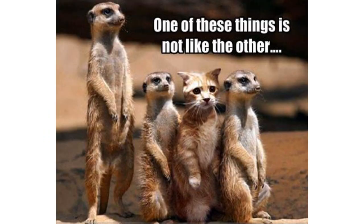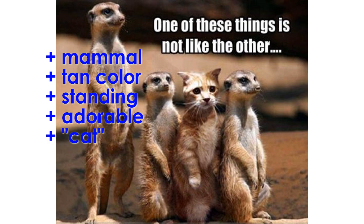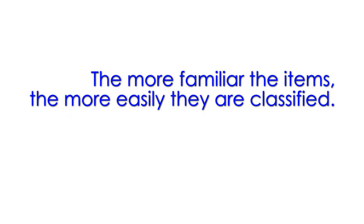The simplest example is the 'one of these things is not the same' test, where all members of a set share a bunch of overlapping features, and the odd item out is somehow lacking in one of those features. The more familiar we are with things, the easier it is for us to categorize and classify them.